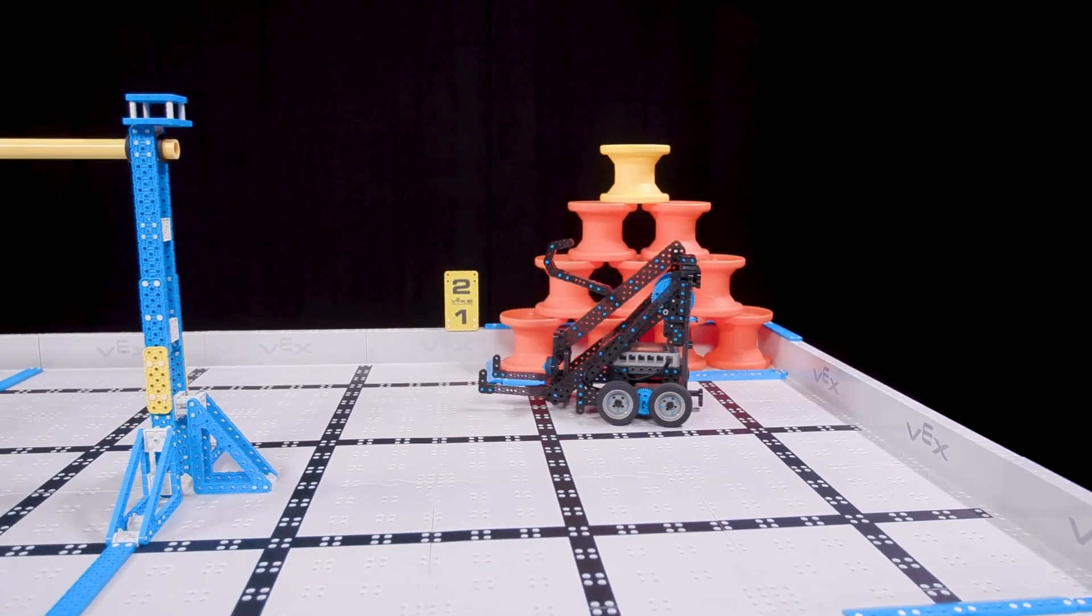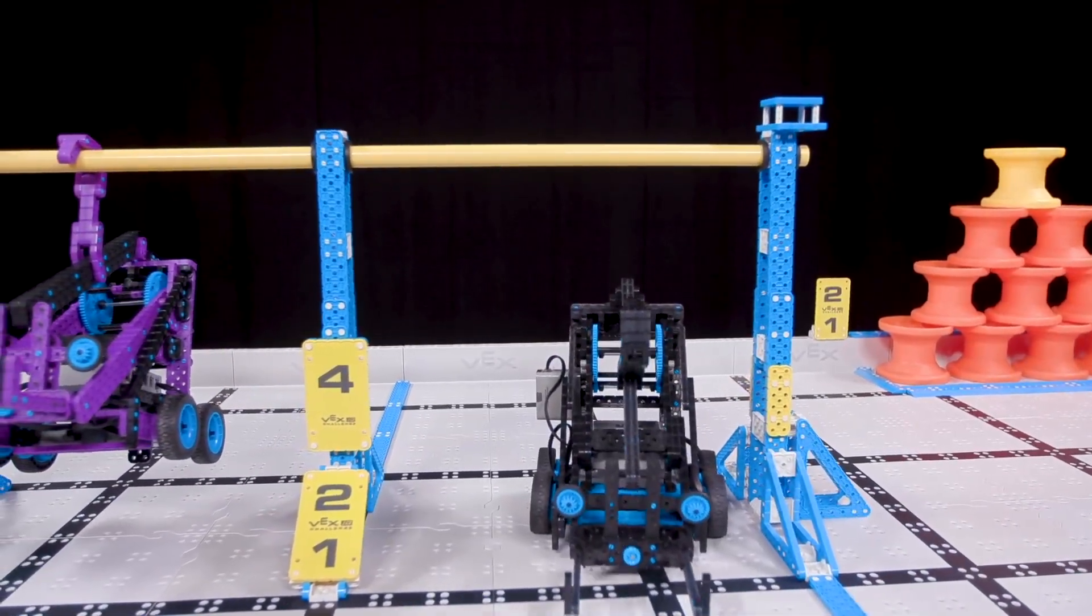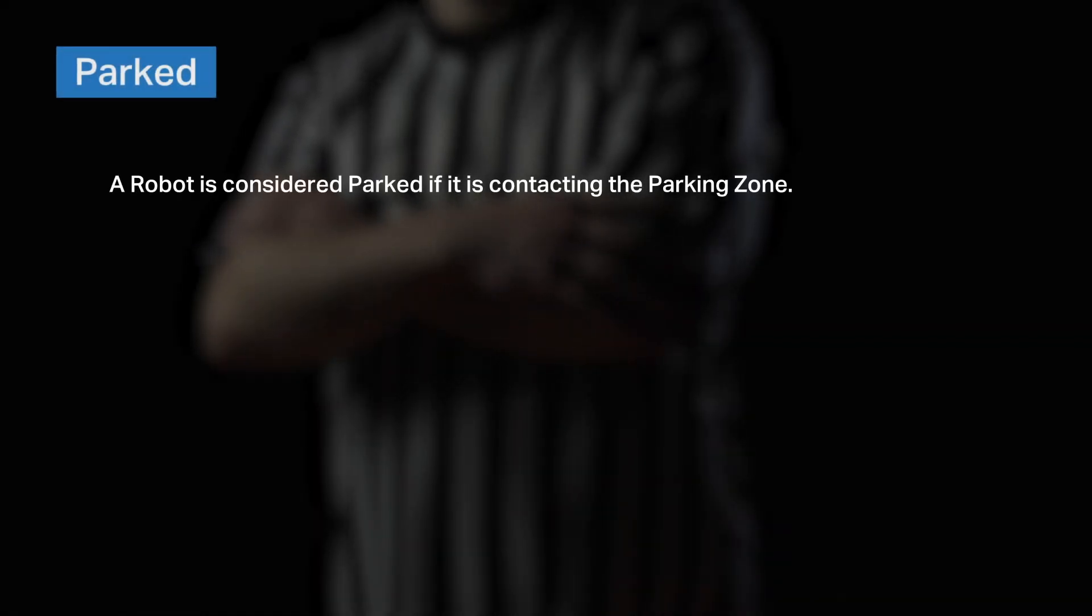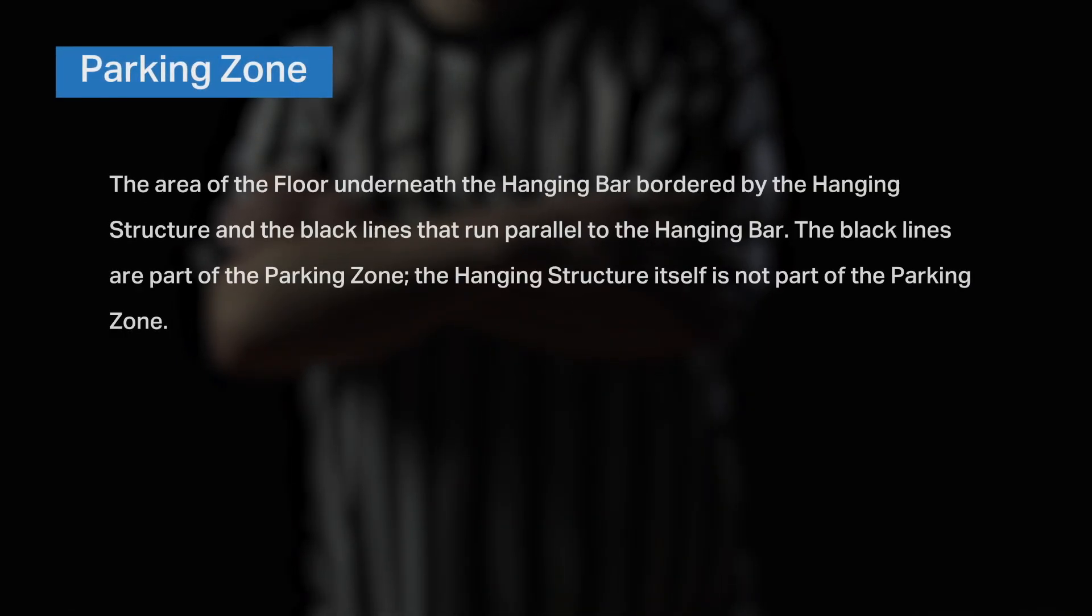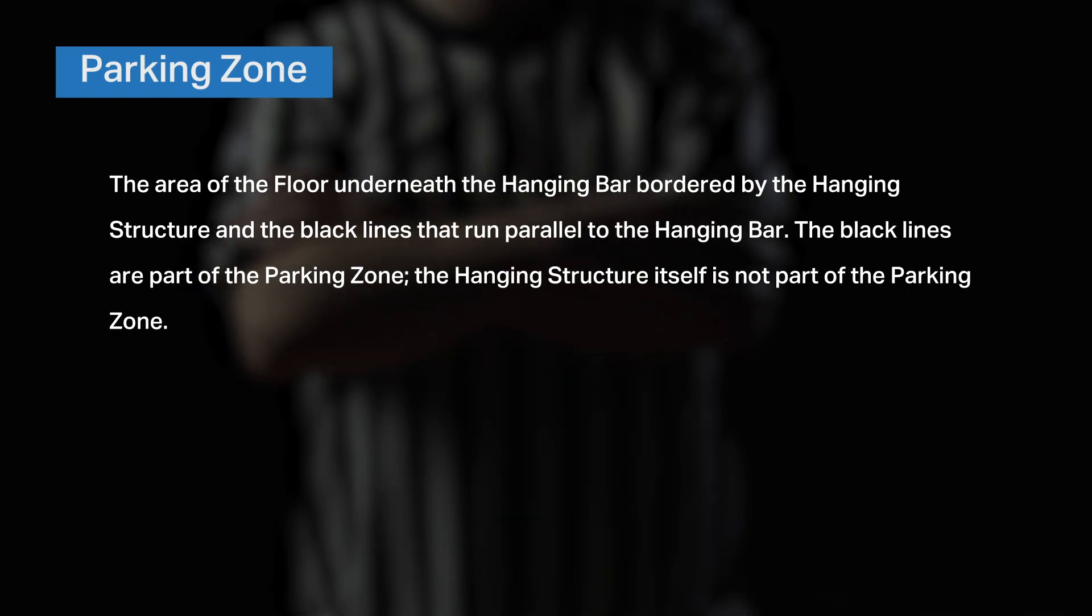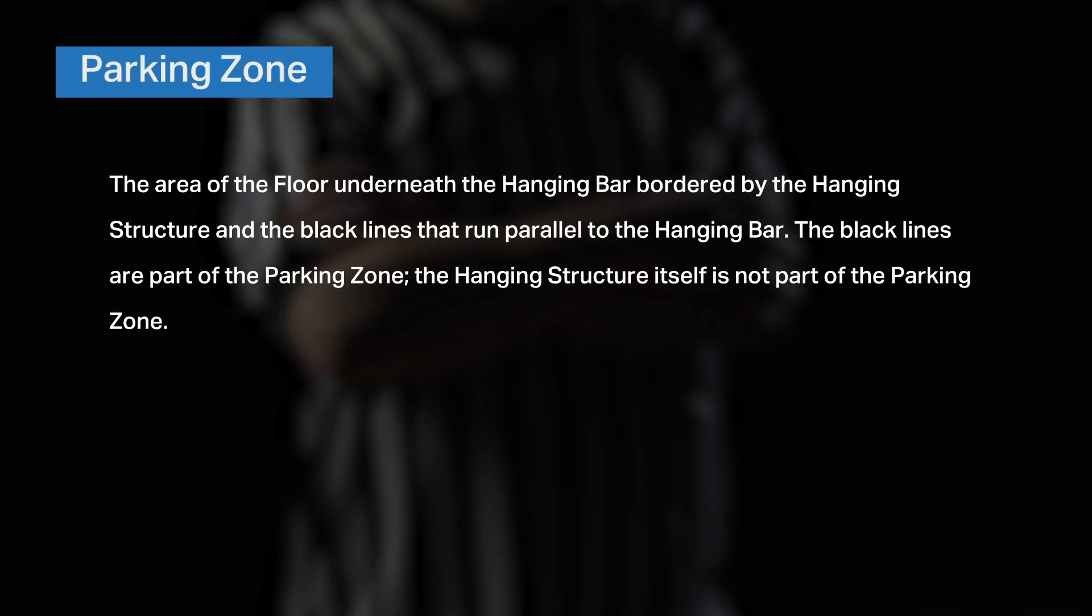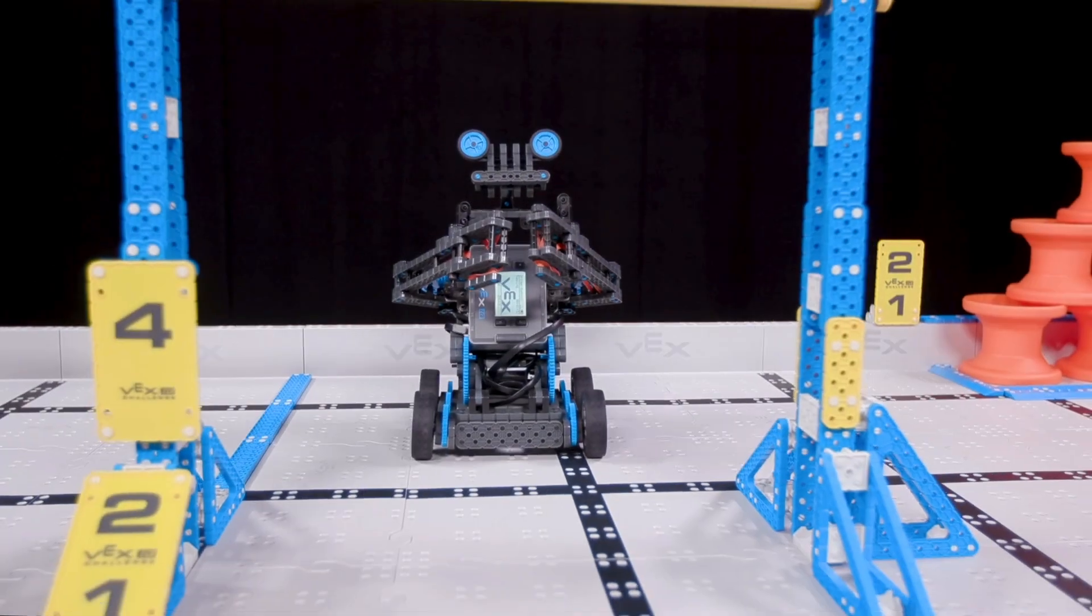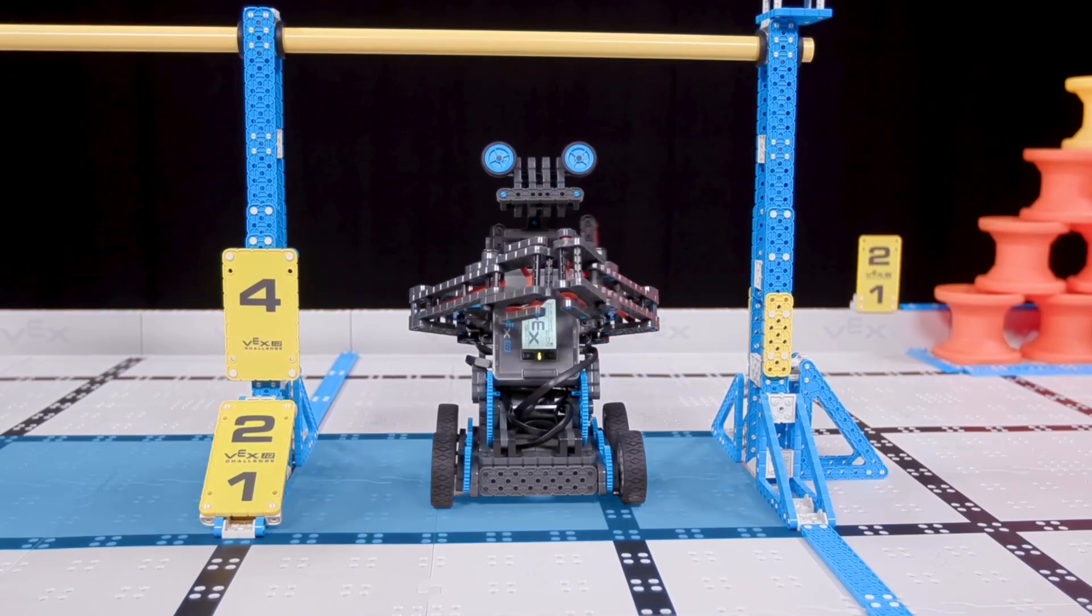And finally, parking and hanging. Robots can receive one point for parking, two points for low-hanging, and four points for high-hanging at the end of the match. As always, let's start with the definitions. Parked: A robot is considered parked if it is contacting the parking zone. The parking zone is defined as the area of the floor underneath the hanging bar bordered by the hanging structure and the black lines that run parallel to the hanging bar. The black lines are part of the parking zone. The hanging structure itself is not part of the parking zone. All that a robot needs to do in order to receive the parking points is to drive over and contact the zone. It's really that simple.